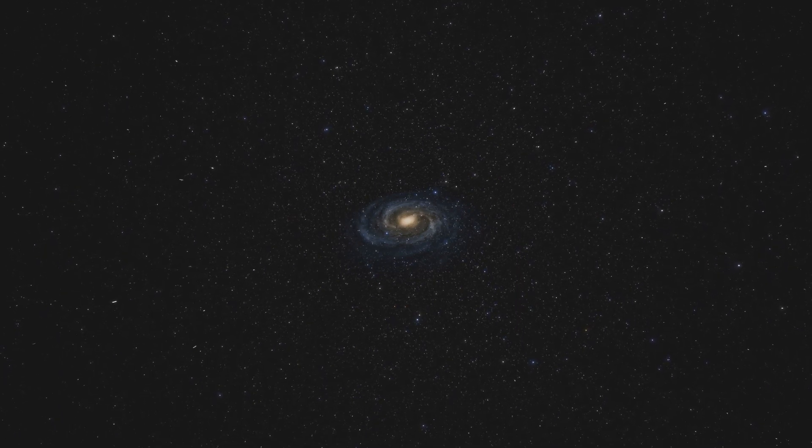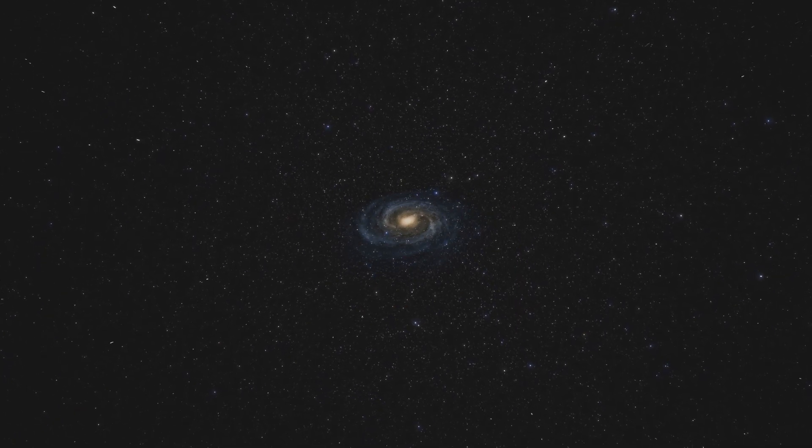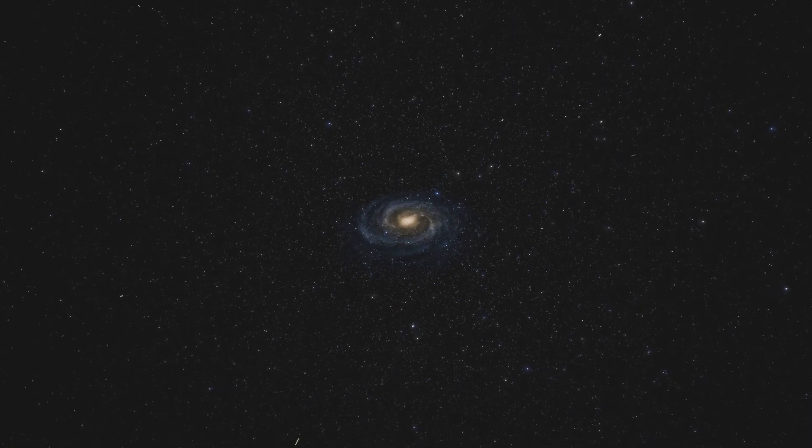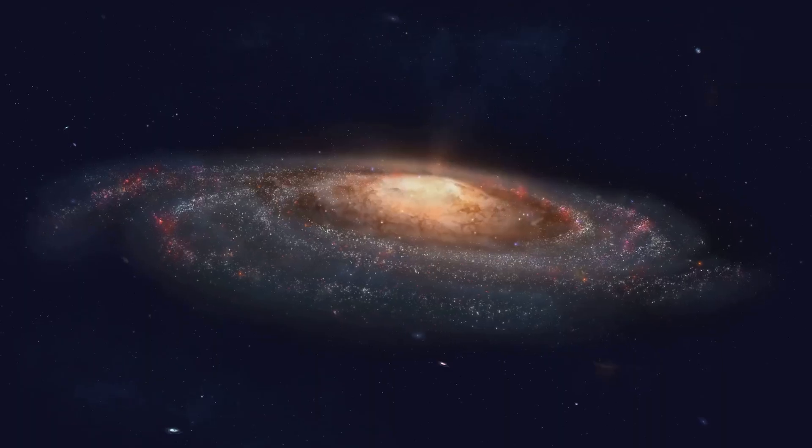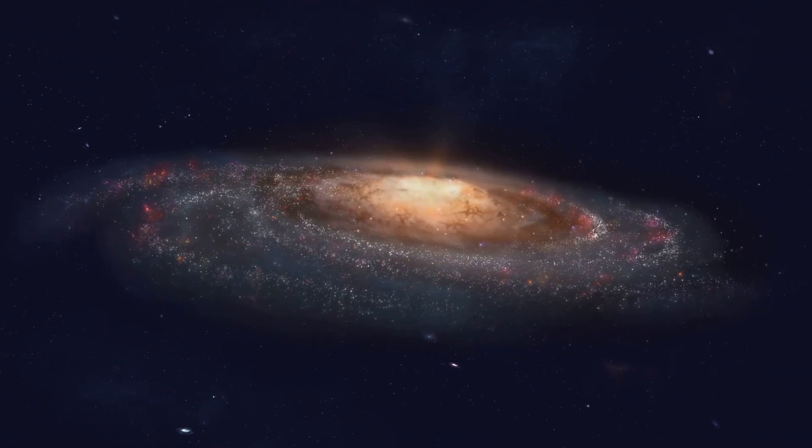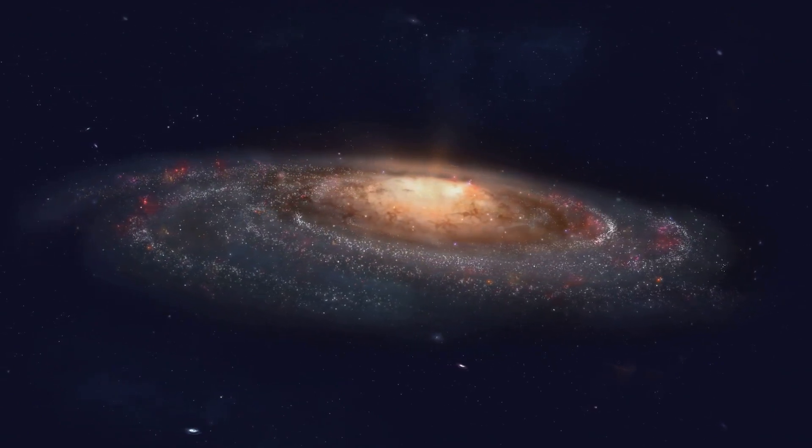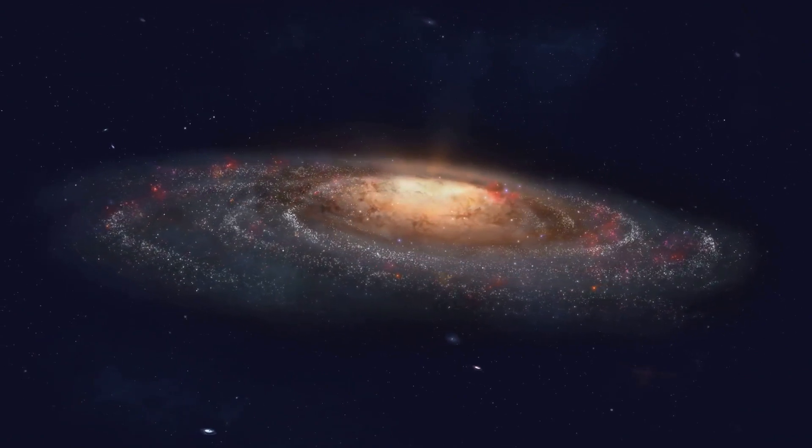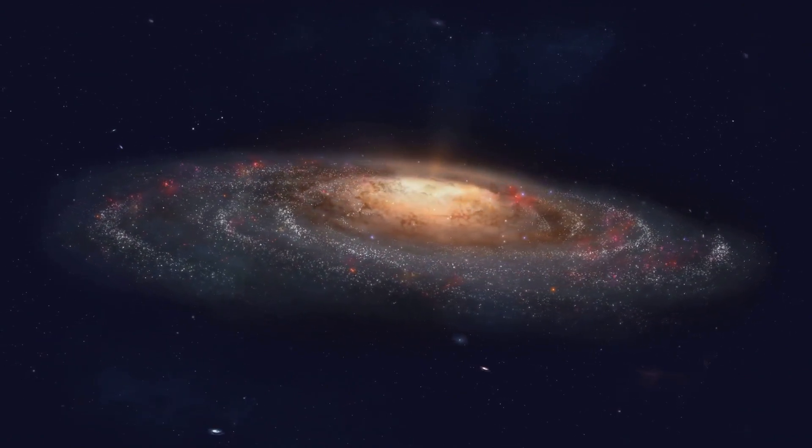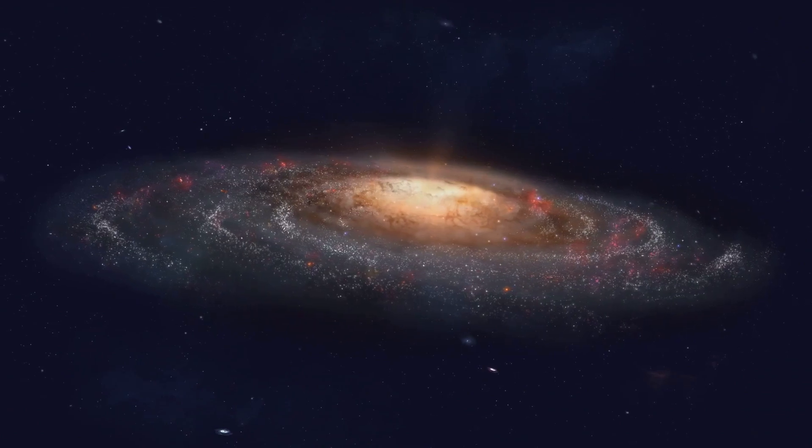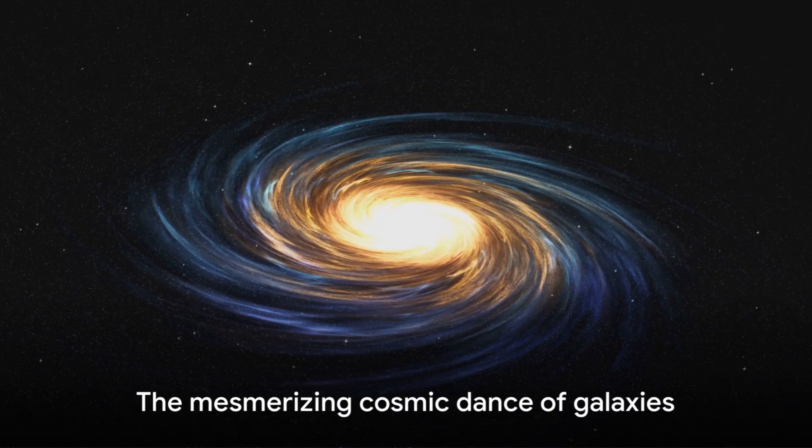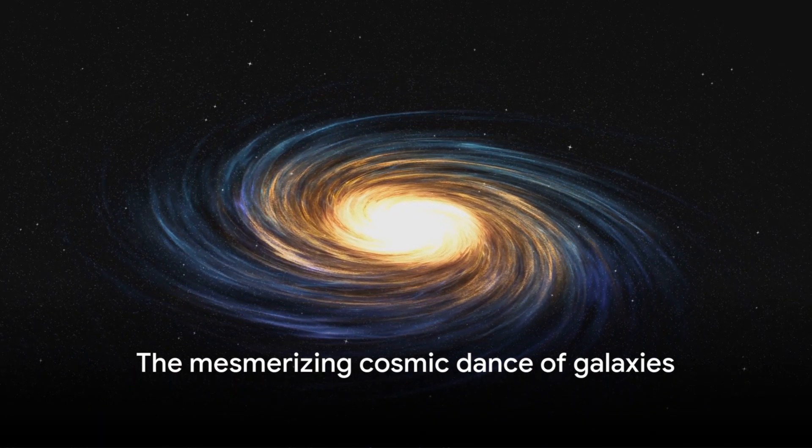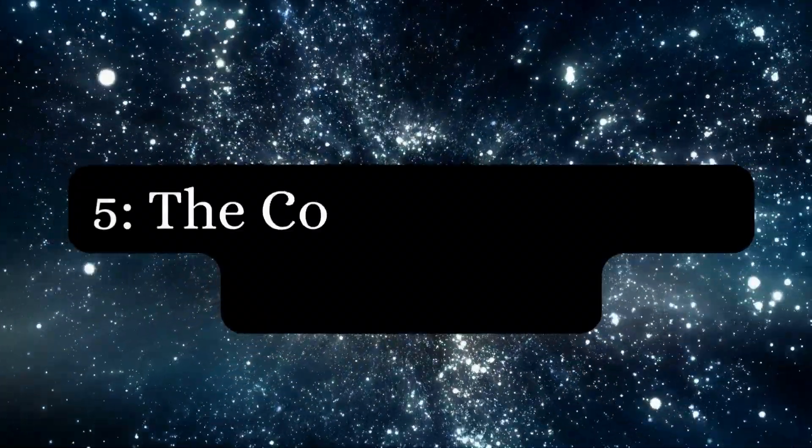Instead, stars on the outskirts of galaxies seem to move at the same speed as those closer to the center. This odd phenomenon, known as the flat rotation curves of galaxies, is one of the great unsolved mysteries of astrophysics. It's a cosmic conundrum that challenges our understanding of gravity and the distribution of matter in the universe. The cosmic dance of galaxies continues to perplex us with its peculiar steps.